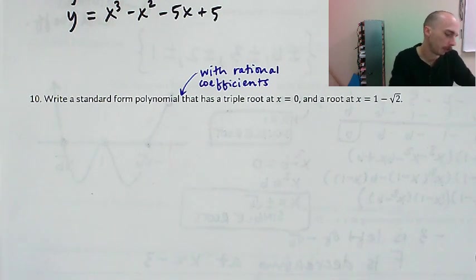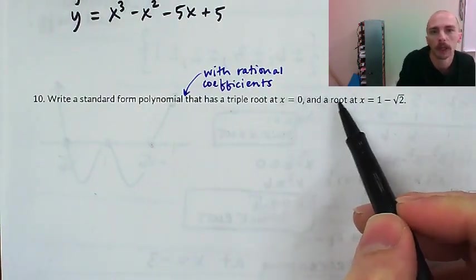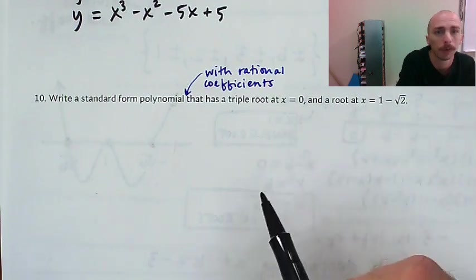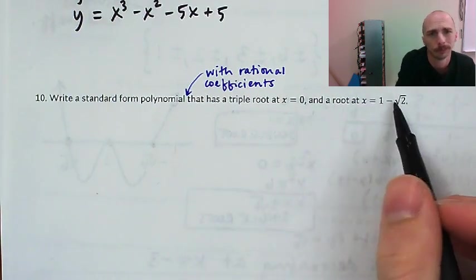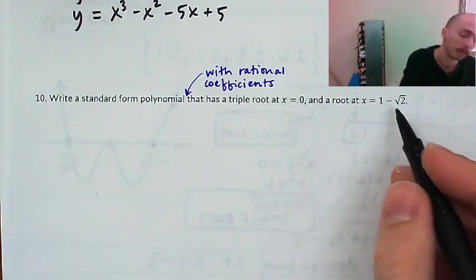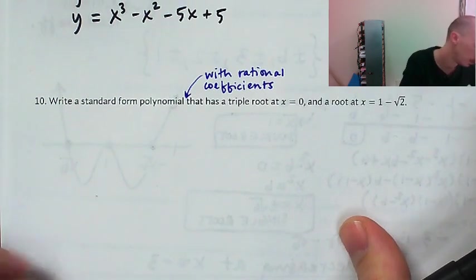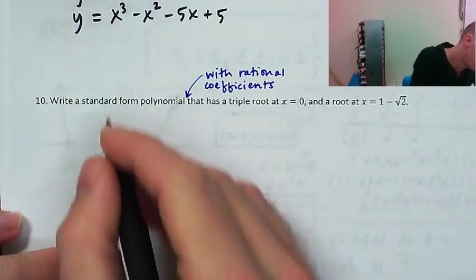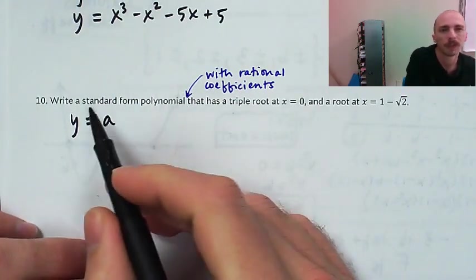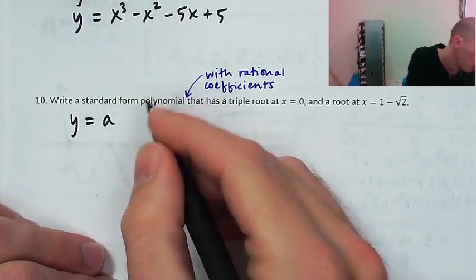This time we're looking for a standard form polynomial with rational coefficients that has a triple root at x equals 0 and a single root at 1 minus square root of 2. There's nothing to say it couldn't be a double root, but we don't want that — that won't be minimal degree. So triple root at x equals 0, and I'm going to let a equal 1 again.